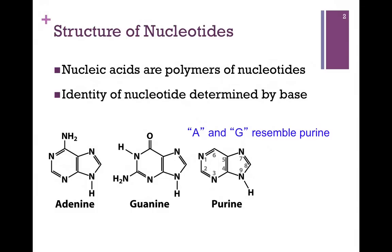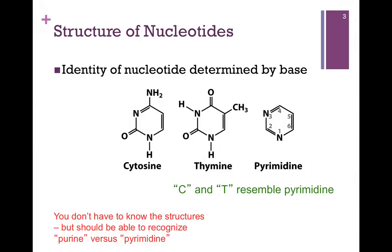We can classify nucleotides based on the identity of the base which is attached to the sugar, and we can classify them in one of two ways. First, purine nucleotides resemble the chemical base purine as illustrated here, and those include adenine and guanine. Then we have pyrimidine bases, and those include cytosine and thymine, and they resemble the chemical base pyrimidine.